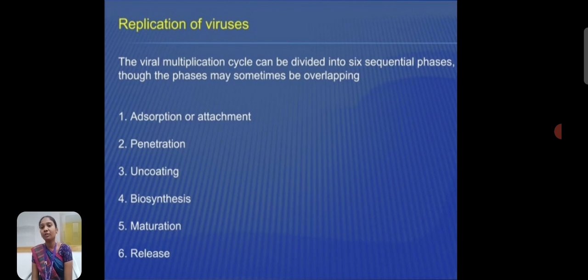The replication of the virus. The viral replication cycle can be divided into six sequential phases, which sometimes overlap. The first is adsorption or attachment. Second is penetration. Third is uncoating. Fourth is biosynthesis. Fifth is maturation. The final one is release.